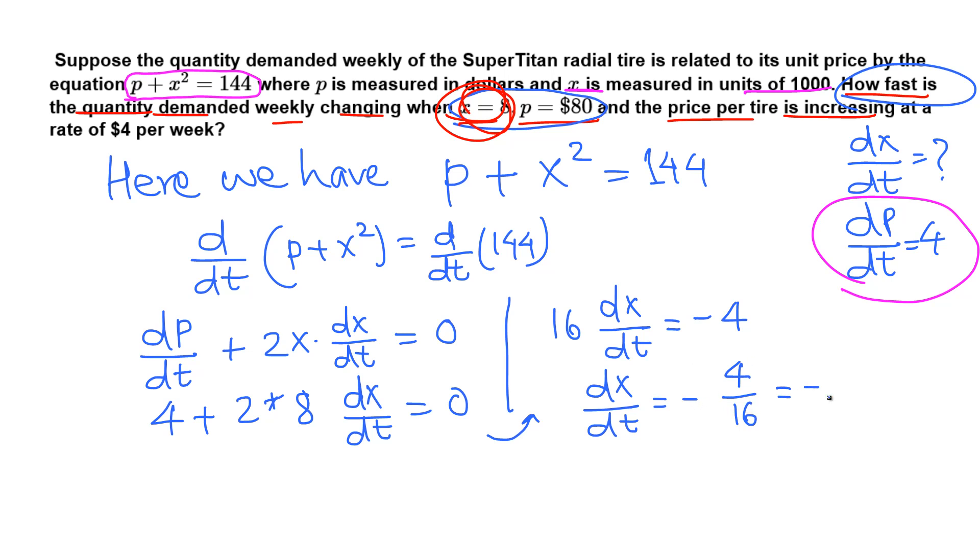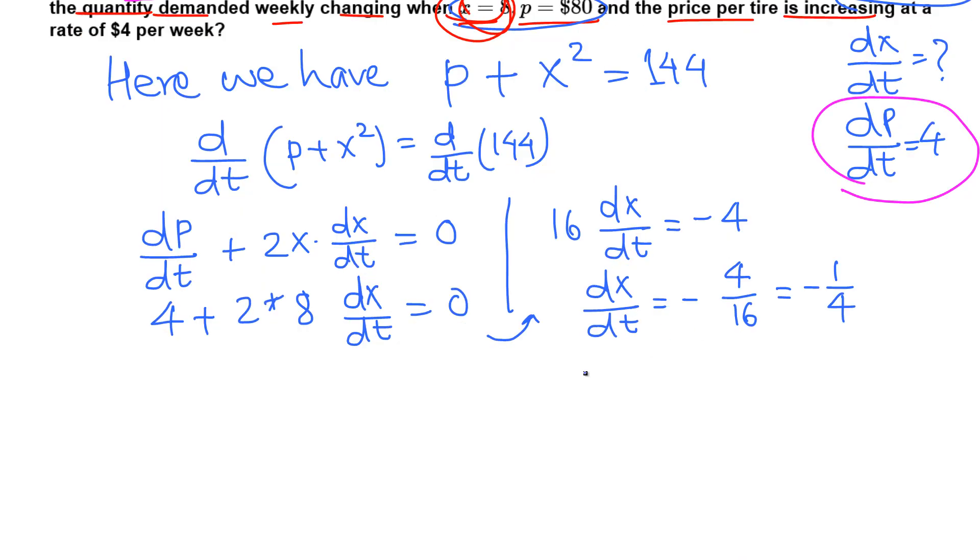16, which is negative 4 goes into 16 four times, negative 1 fourth. So negative 1 fourth. Negative means the rate of change of x is decreasing. And what is x? That's the number of tires, and that's given in terms of thousands. So we can write this one as dx over dt equals negative 1/4 in thousands, so we can multiply by 1000. So 1/4 of 1000 is 250.